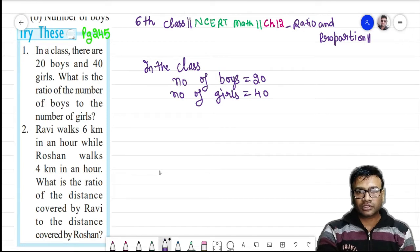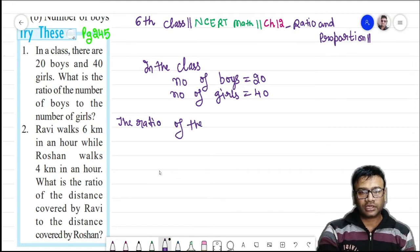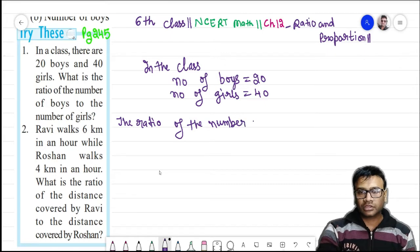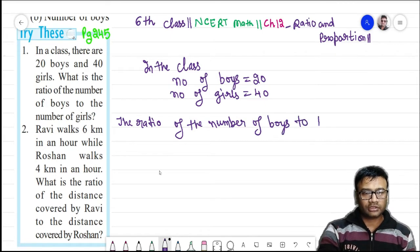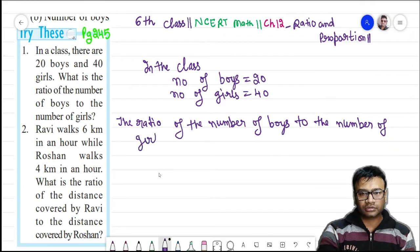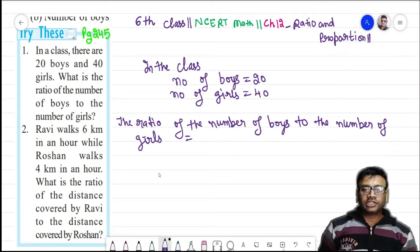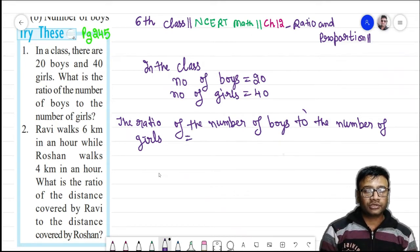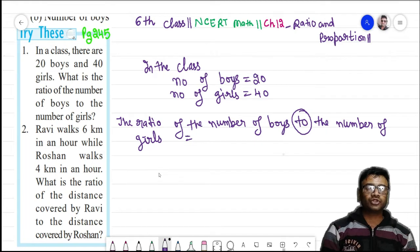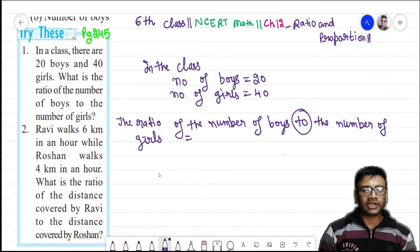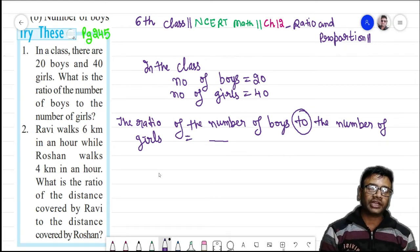We will write the ratio of the number of boys to the number of girls. It means that the number which is coming to the left of these two you will write first to the left of the ratio. Or you can say that if you are writing in fraction form then you will write in the numerator which is coming to the left side of the two. And which is coming to the right side of two you will write that in the denominator.